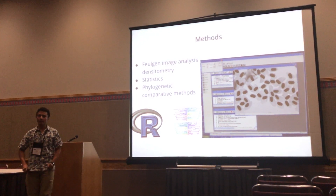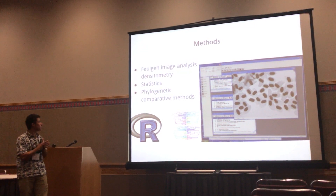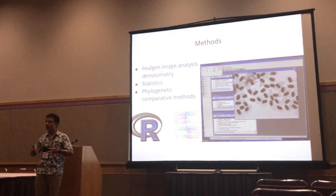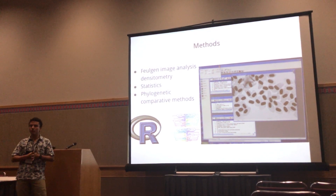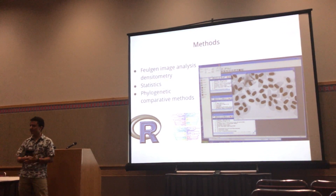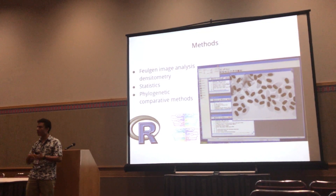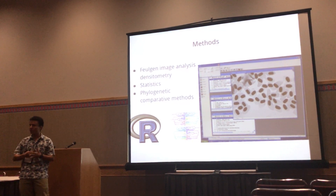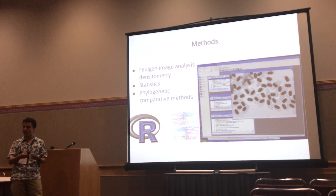We used a technique called Feulgen Image Analysis Densitometry. It's very simple: you stain the nuclei of the red blood cells of the salamanders, then use image analysis software to convert pixel counts to integrated optical density, and using a known genome you can do a simple regression to get an estimate of genome size. Then we did statistics with the body sizes, and we are also working with phylogenetic comparative methods to see if these correlations are significant.